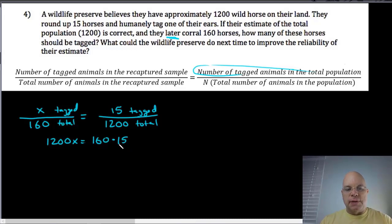160 multiplied by 15 is easy because it's 10 160s which is 1600, and 5 160s which should be half of 1600 since 5 is half of 10, so that's 2400 for my product. 2400 is equal to 1200x.